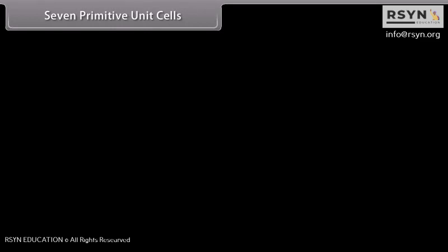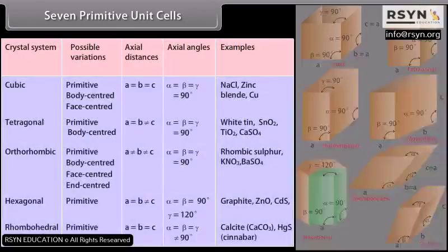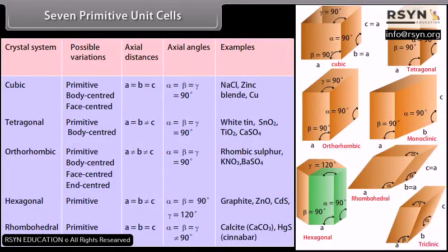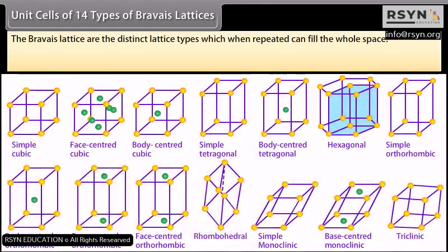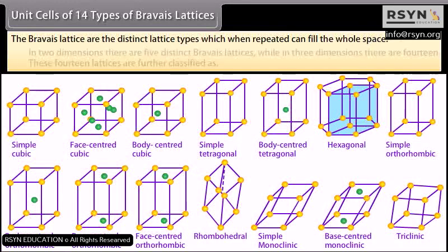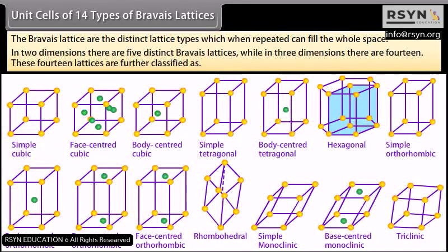There are 7 types of primitive unit cells. Their characteristics, along with the centred unit cells they can form, have been listed in the table. The Bravais lattices are the distinct lattice types which, when repeated, can fill the whole space. In 2 dimensions there are 5 distinct Bravais lattices, while in 3 dimensions there are 14.